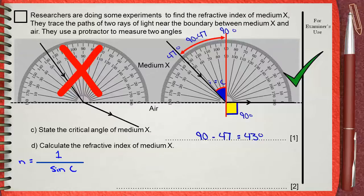Of course, you cannot use this equation unless you have the critical angle previously. So, refractive index equals 1 divided by sine 43. So, the refractive index is 1.47. Remember that the refractive index does not have any units.